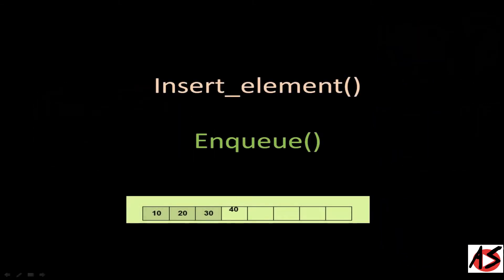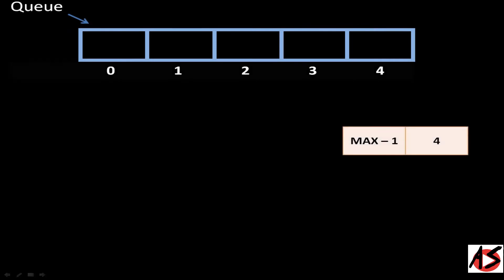Let's look at insertion, commonly known as Enqueue. This is our Queue array of size 5, meaning we can insert a maximum of 5 elements at a time. The indexes of the array are 0, 1, 2, 3, and 4. Since the array starts from 0, the largest index is 4, that is max minus 1. Insertion is only possible from the rear or tail end, so we manage one variable to store it called the rear pointer.